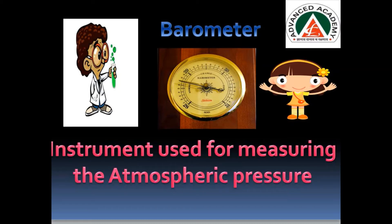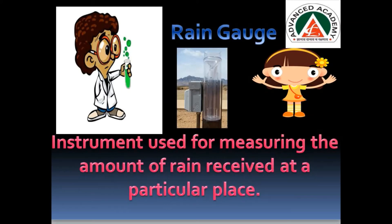Then uncle showed Pihu another instrument and told her, 'Pihu, this is a rain gauge. It is an instrument used for measuring the amount of rain received at a particular place.' Pihu got excited. 'Wow! So we can measure how much rain has fallen at any place!'